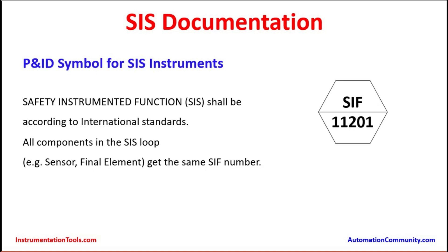As part of this documentation, safety instrumented functions also need to be earmarked exclusively in the Piping and Instrumentation Diagram (P&ID). Safety instrumented functions shall be represented according to international standards — sensors and final elements involved in the SIS loop will be identified with a hexagonal symbol. The SIS number is a sectional symbol indicating the component is used in a safety instrumented system function, and it will carry a number. All components in the loop — the sensor and the final element — get the same SIS number, which corresponds to a particular hazardous condition and scenario.